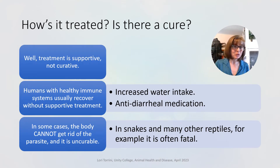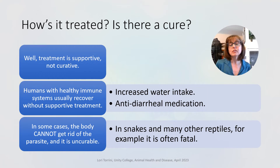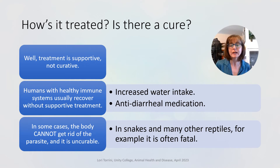How is it treated, and can we cure it? Treatment is supportive, not curative. That means there are ways we can support organisms in recovering, but we have no way to actually cure someone of crypto. Humans and other animals with healthy immune systems usually recover without supportive treatment, but supportive treatment would look like increased water intake, possibly IV fluids if extremely ill, and antidiarrheal medication. In some cases the body just cannot get rid of the parasite, and it is not curable. In snakes and many other reptiles, it's often fatal because it impacts them too quickly and they aren't able to recover.